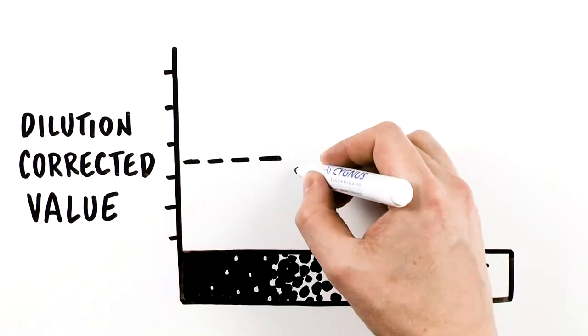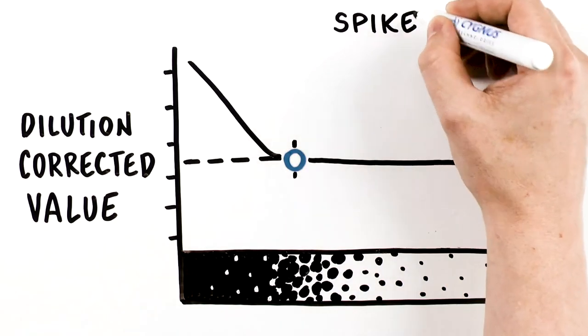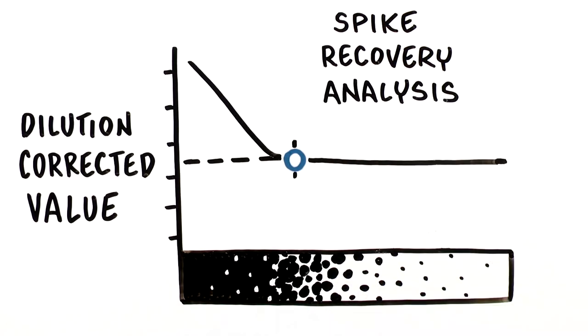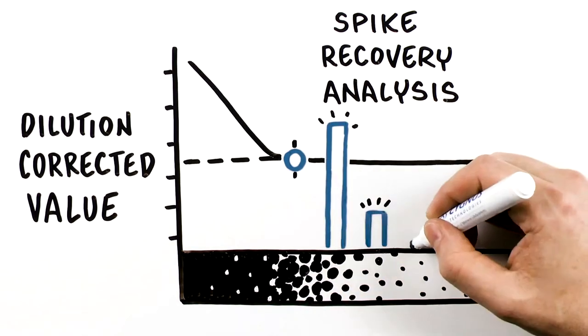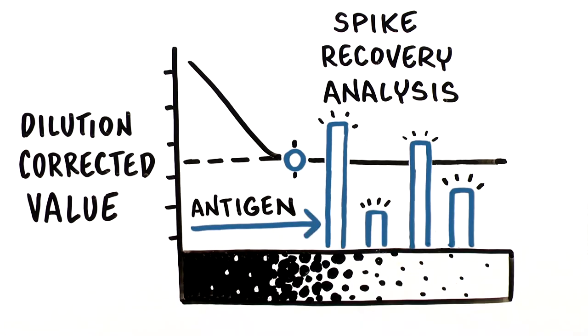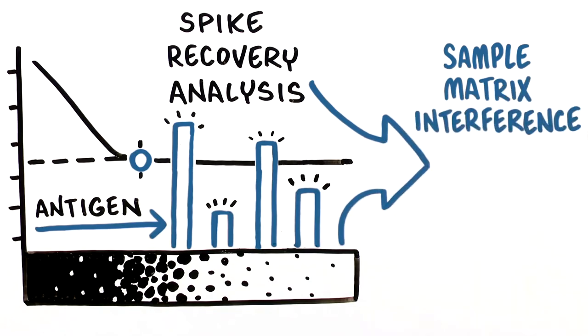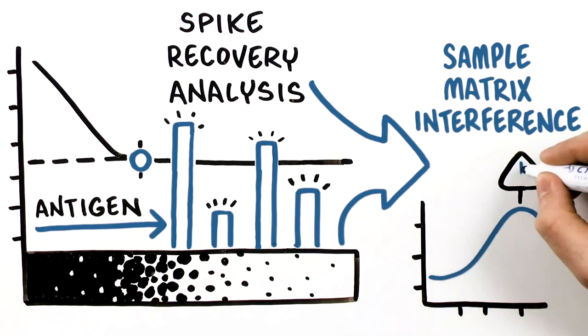When a successful determination of an MRD is achieved, an additional step known as a spike recovery analysis should be performed to ensure assay accuracy. This is performed by spiking various levels of antigen into the sample diluted to its MRD. Analyzing the spike recovery results can further differentiate between sample matrix interference and antigen excess.